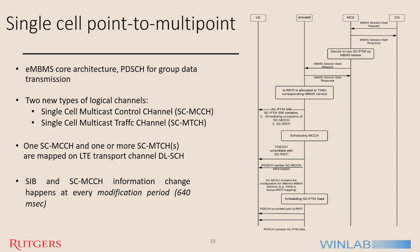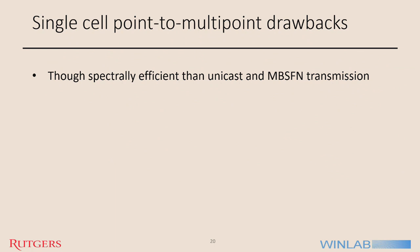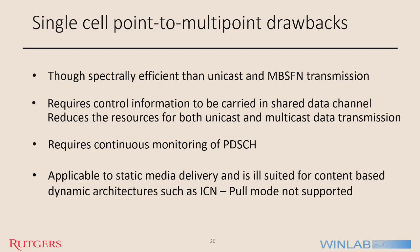We try to take advantage of these drawbacks to make something better. SCPTM, though more spectrally efficient than unicast and MBSFN transmission, comes with significant drawbacks: it requires control information to be carried in the data channel and requires continuous monitoring of PDSCH. The modification period is 640 milliseconds, which in today's terms is significant and adds substantial latency to the multicast content transmission. Also, as mentioned, everything is previously decided — there is no on-demand or pull-based capability. What we want is something that is inherently pull-based, because information-centric networking is inherently consumer-oriented.